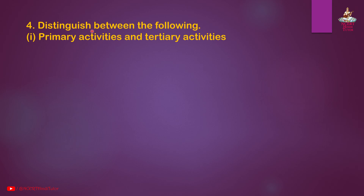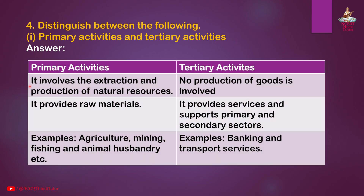Section 4: Distinguish between the following. First, primary activities and tertiary activities. Answer: Primary activities involve the extraction and production of natural resources and provide raw materials. Examples: agriculture, mining, fishing, and animal husbandry. Tertiary activities involve no production of goods; they provide services and support primary and secondary sectors. Examples: banking and transport services.